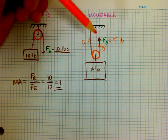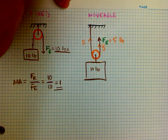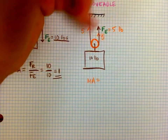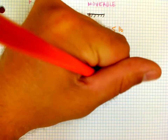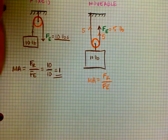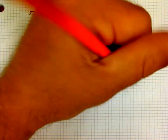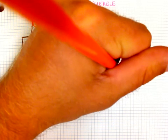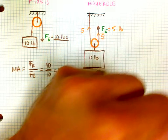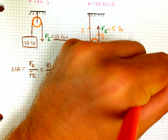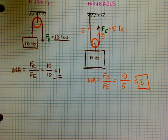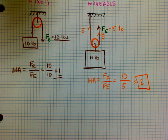Five and five add up to ten, which means the effort force on the right-hand side is only five pounds — I only need to pull up with five pounds. When I calculate mechanical advantage, it's 10 pounds of load over the 5 pounds I put in, so the mechanical advantage is two. I got twice as strong by using a movable pulley instead of a fixed pulley.